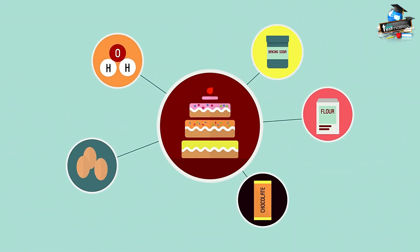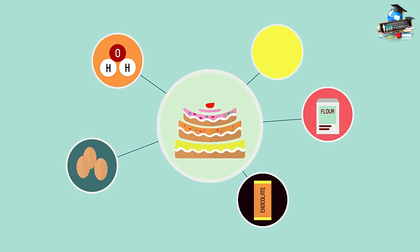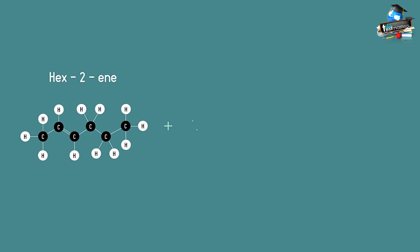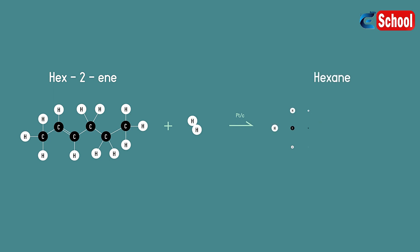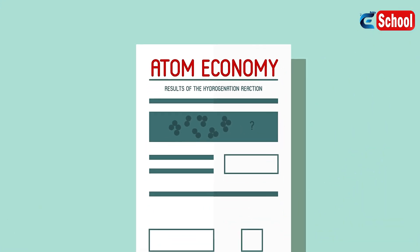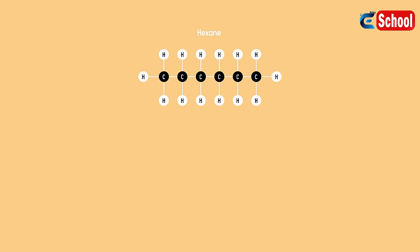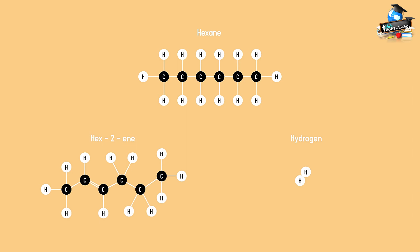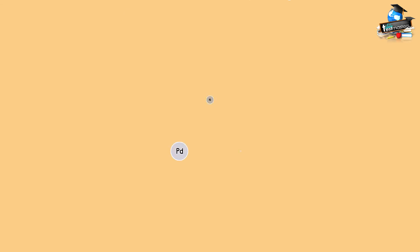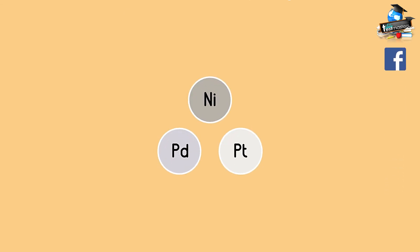Going back to the cake example, it wouldn't be a good idea to add all those ingredients and then find that one of them is not baked into your final cake. When an alkene such as hex-2-ene is hydrogenated in the presence of a metal catalyst, the product is hexane. This hydrogenation reaction has a 100% atom economy. The final product, hexane, has all the atoms from the reactants — hex-2-ene and hydrogen — with no atoms wasted as unwanted by-products. Furthermore, the use of a catalyst makes this process very efficient and the catalyst can be reused.